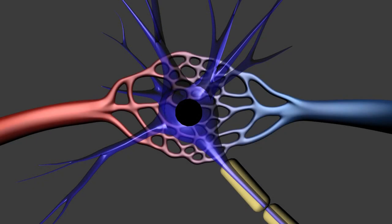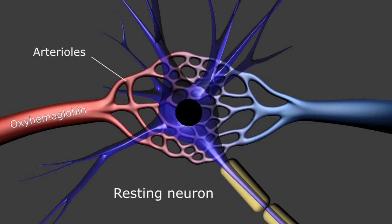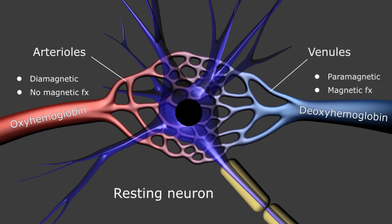The local blood supply to a group of resting neurons is sufficient to support the basal metabolic needs of the cells themselves. In the arterioles, the incoming blood is highly oxygenated. Again, oxyhemoglobin has a reddish hue and is diamagnetic with no significant effect on the regional MR signal. The neurons extract what they need to stay alive leaving predominantly the bluish paramagnetic deoxyhemoglobin in the venules.